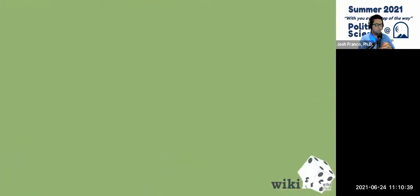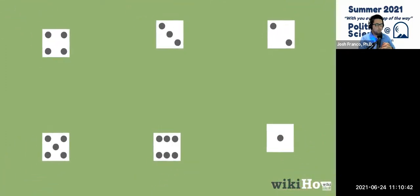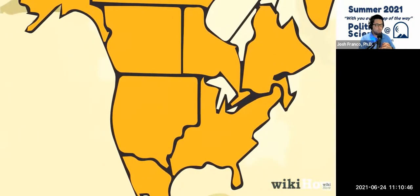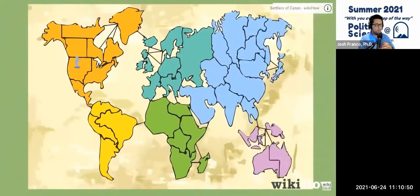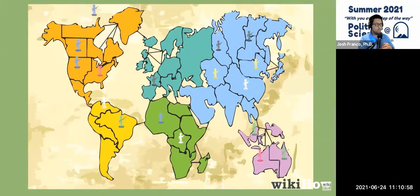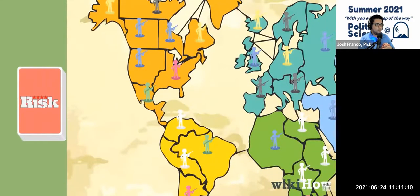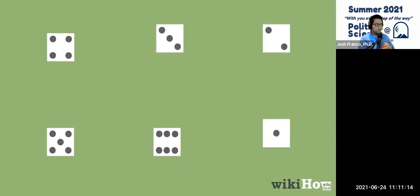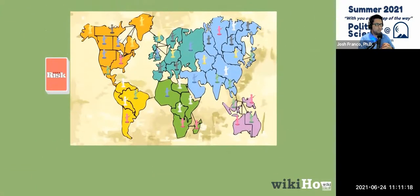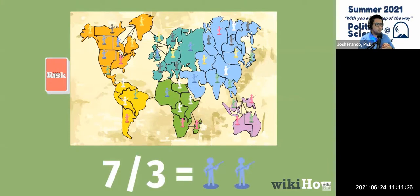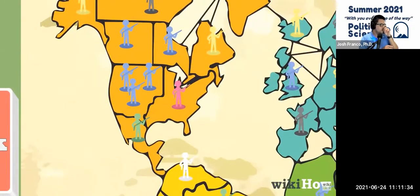Once each player has received their starting troops, everyone rolls a die. The player with the highest roll places one of their troops on the board first on one of the unoccupied spaces. Then players take turns clockwise, placing one troop at a time. Players can't place more than one troop in a space until every space on the board is occupied with at least one troop. Once everyone has placed all their troops, shuffle the Risk cards and place them on the side of the board. Each player rolls a die and the player that rolls the highest number goes first. On a player's turn, they count the number of occupied territories they control and divide by three — this is the number of troops they can place on the board, in any space they occupy.